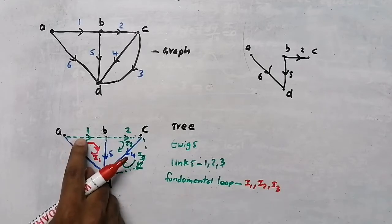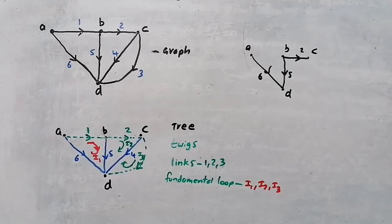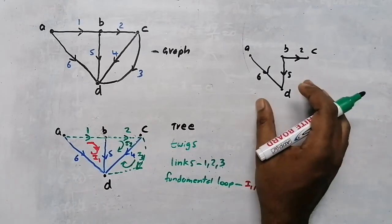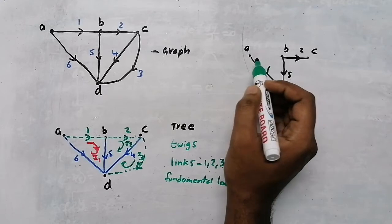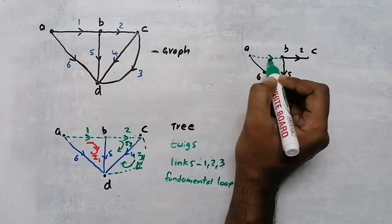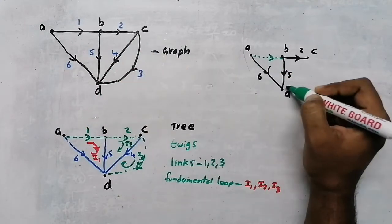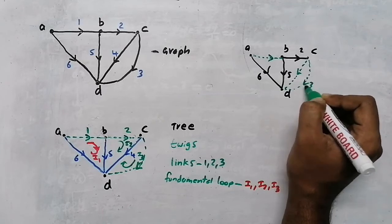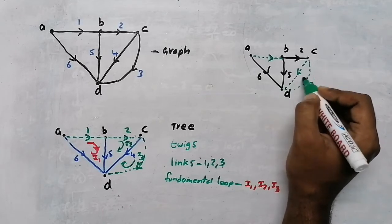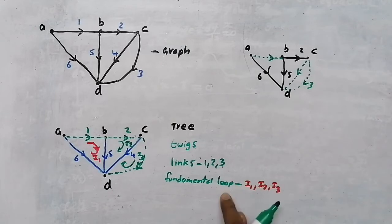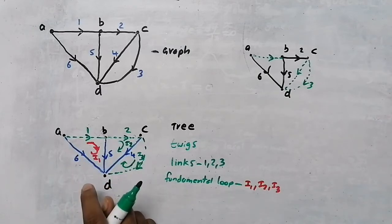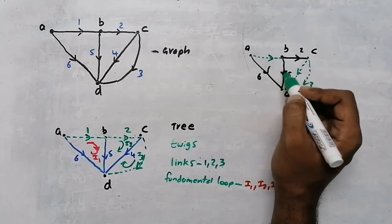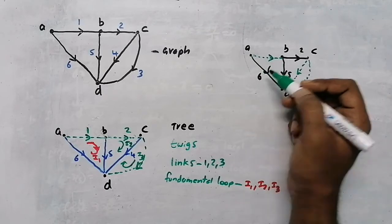Why do we call them fundamental loops? Because there is only one link and the remaining are branches. For example, if I take the other tree, the unconnected branches would include branch 1, branch 4 and branch 3 — two links would be present. In that case it is not a fundamental loop, because in a fundamental loop there will be one link and the remaining branches. Here there are two links, so this is not a fundamental loop. Whereas the first case is a fundamental loop because there is only one link and the remaining are normal branches.